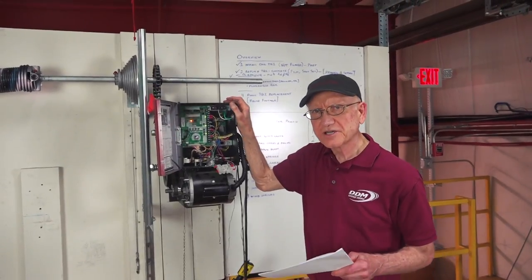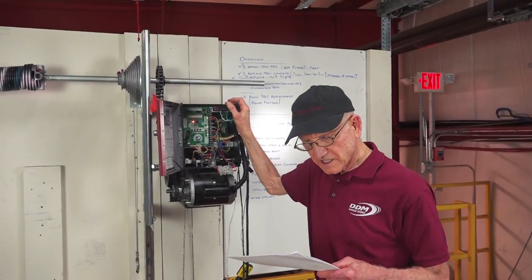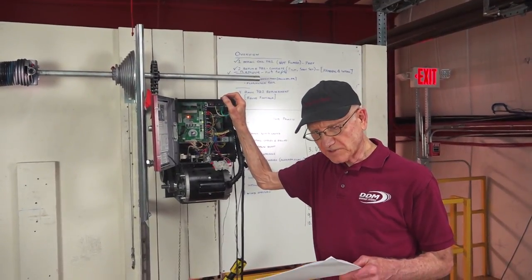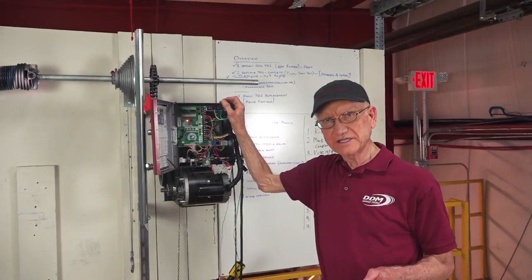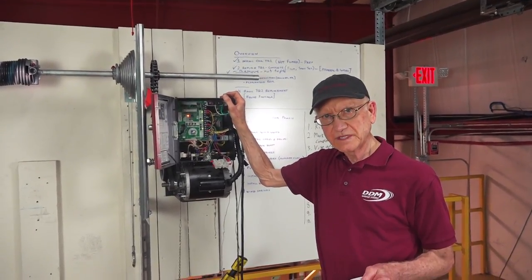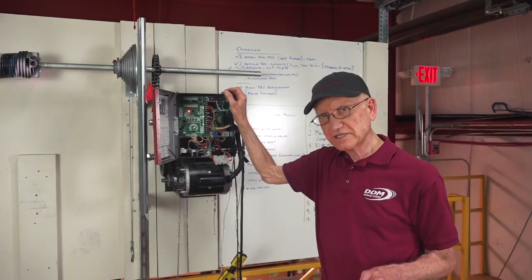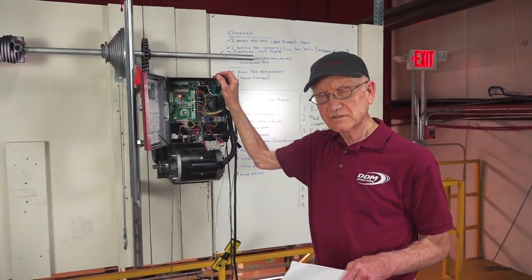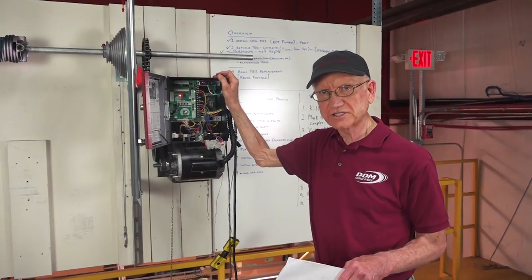Another error code that you may get is with eight blinks. This would indicate that there's a brownout detected. If you're ever getting eight blinks, you need to check your voltages. We have a separate video where we show how to check the voltages.